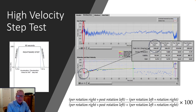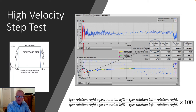And that's actually what we're seeing when we perform a high velocity step test. The peak nystagmus response that occurs just immediately post-acceleration is a very robust VOR response at about 167 degrees per second.